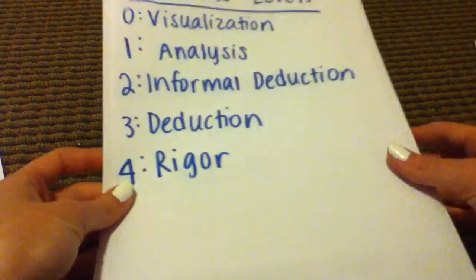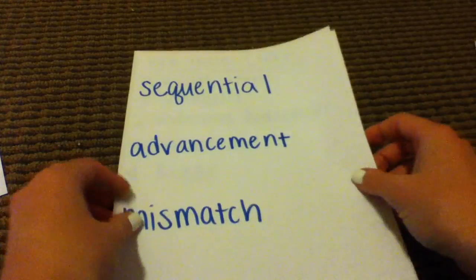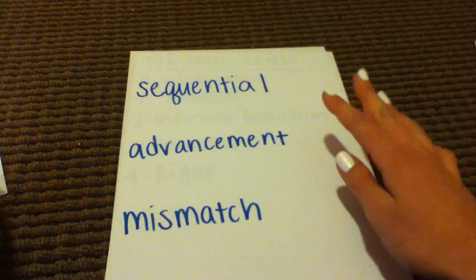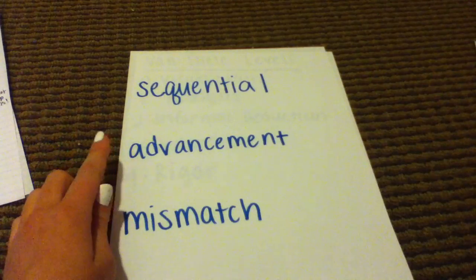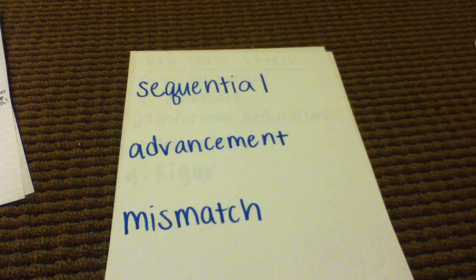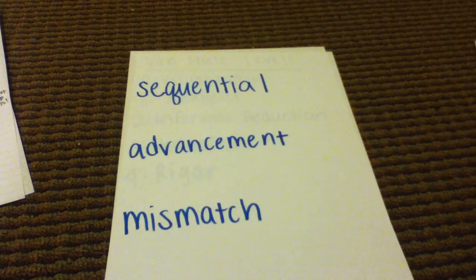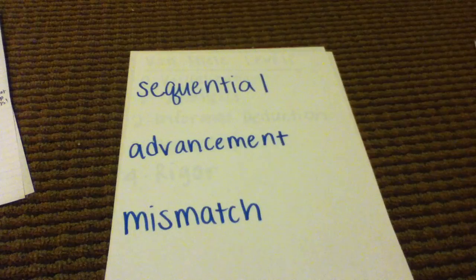A couple of important characteristics of the Van Hiele model: first, it is sequential, which means we must go through the levels in order. You cannot skip a level — students have to progress in order to truly understand.